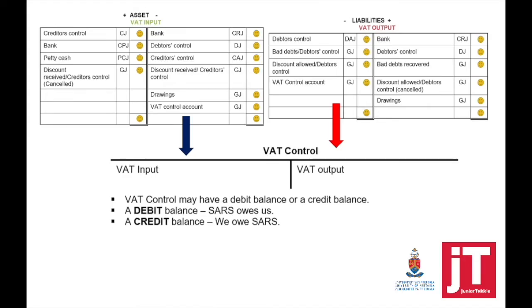Looking at our journals: we have our cash journals — cash receipts journal, cash payment journal, petty cash journal. We have our credit journals — debtors journal, creditors journal, returns journals, debtors allowance journal, creditors allowance journal — and then we have the general journal where we take everything else. You need to identify which one of those journals will have VAT input and VAT output, and then post that to the VAT input account and to the VAT output account.